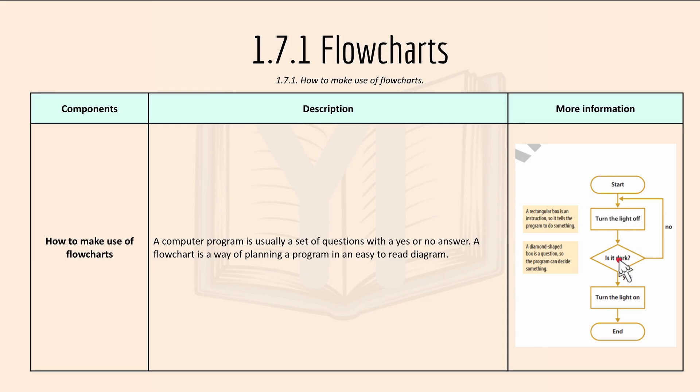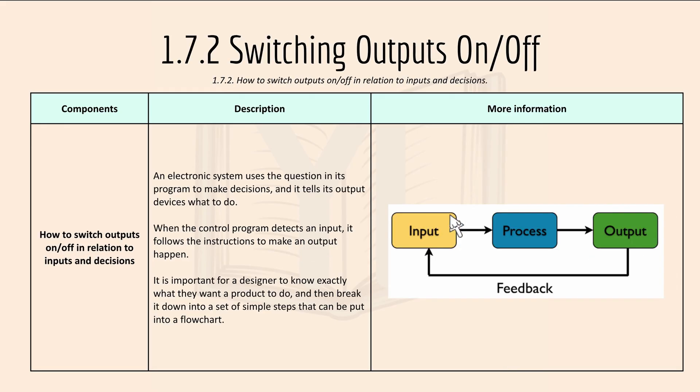And to is it dark? If it's yes then it will continue. If it's no then it will repeat this loop over here. Then we have 1.7.2 how to switch outputs on and off in relation to inputs and decisions.